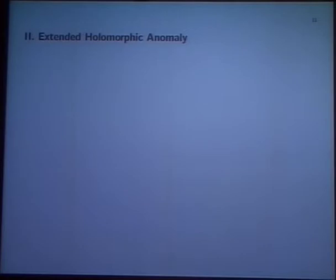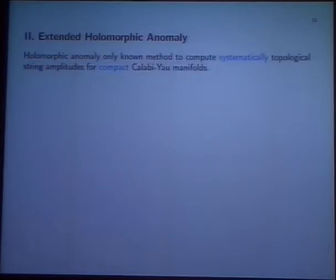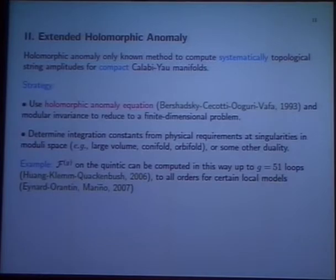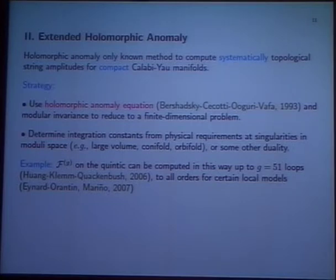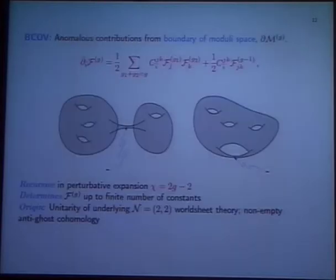To explain why orientifolds are the preferred way, I first have to tell you how these computations are done — how we get the evidence for tadpole cancellation using orientifolds. This is the extended holomorphic anomaly equation. The holomorphic anomaly of BCOV is really the only known method to compute systematically on compact Calabi-Yau manifolds. The basic strategy is to use the holomorphic anomaly equation to reduce to a finite-dimensional problem, then determine integration constants from singularities in the moduli space. The state-of-the-art: F_g on the quintic can be computed up to genus 51.